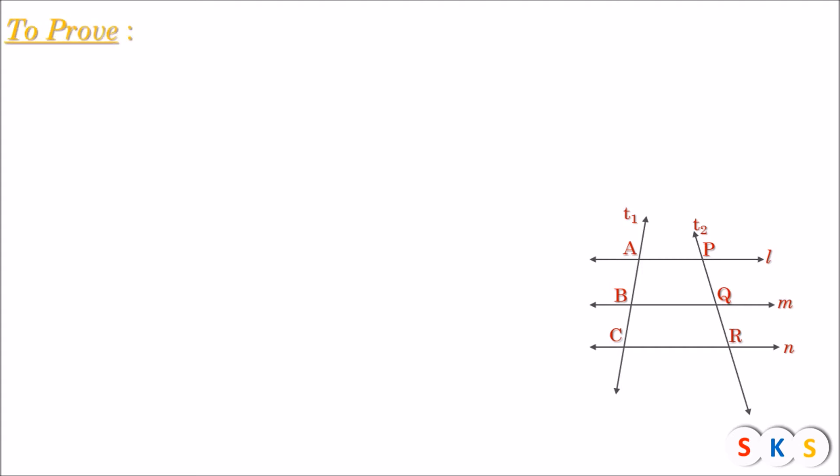What I have to prove here is that the ratio of intercepts formed on one transversal is equal to the ratio of intercepts formed on the other transversal — that is, AB upon BC equals PQ upon QR. To prove this, we are going to take the help of the Basic Proportionality Theorem.